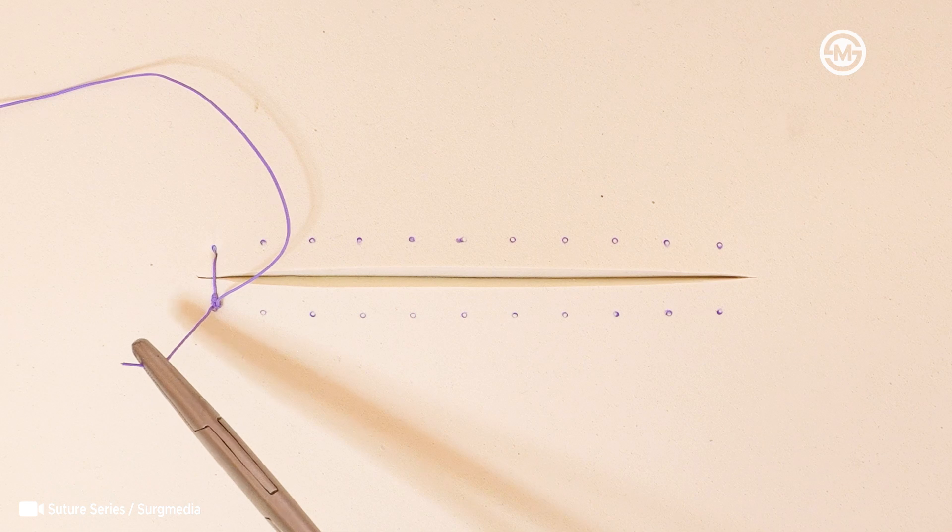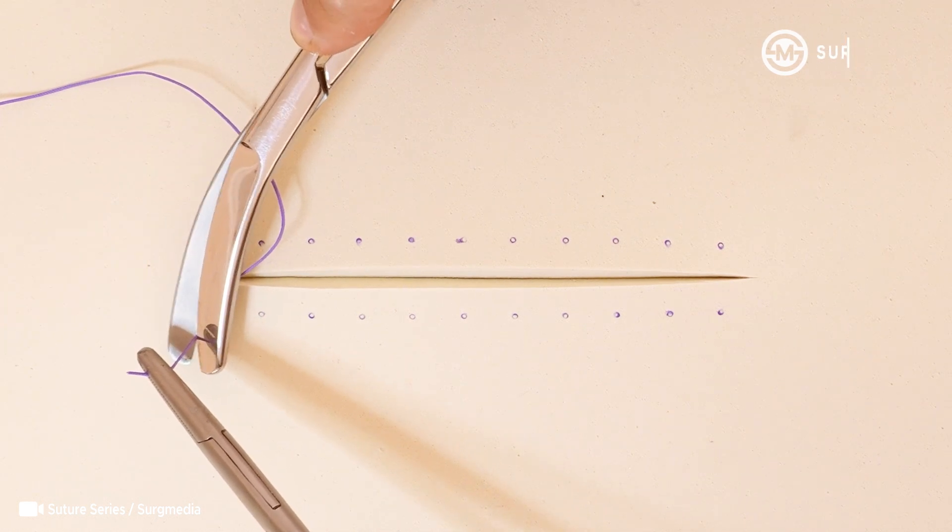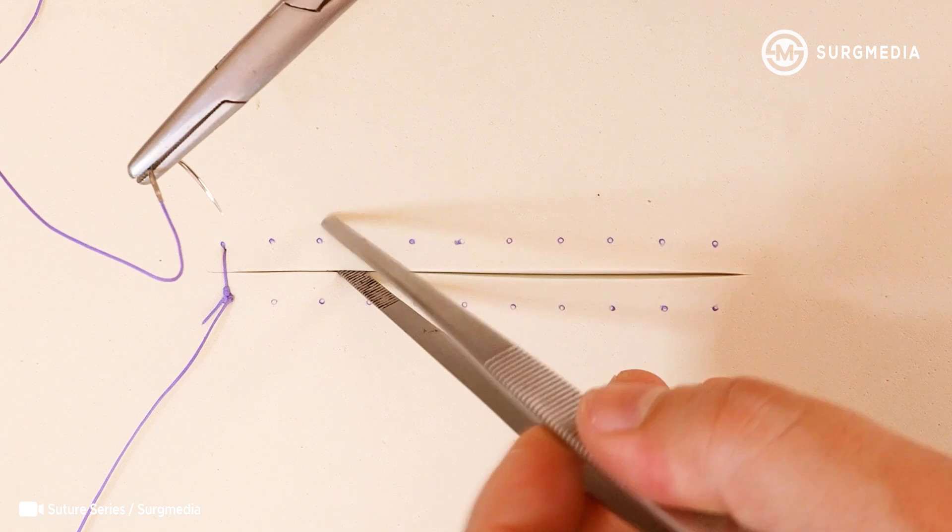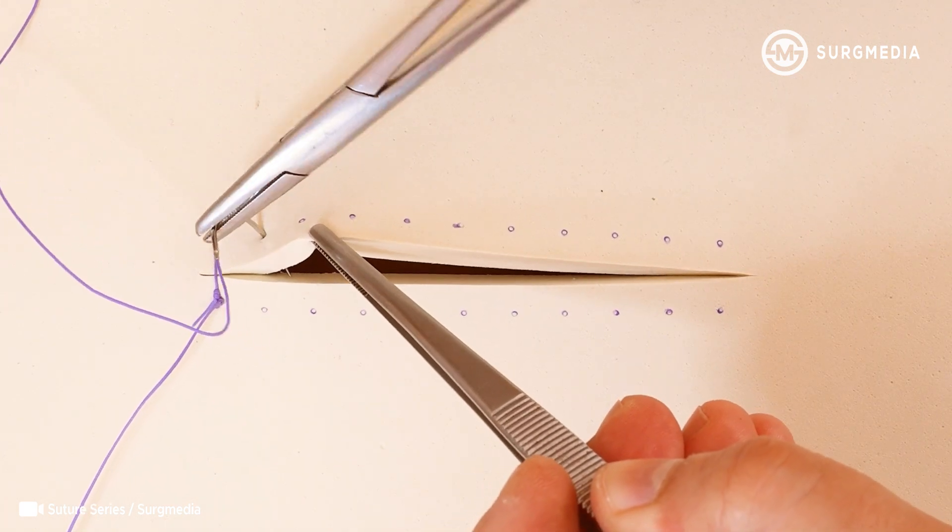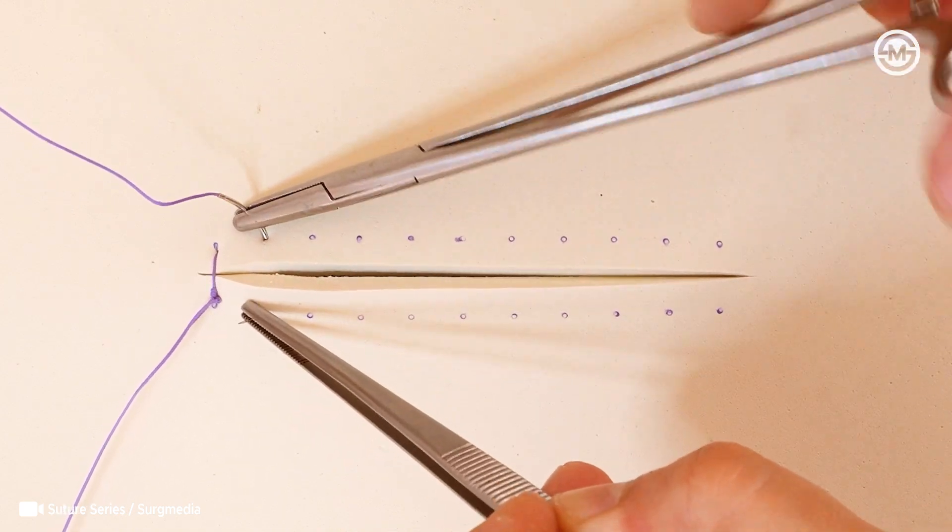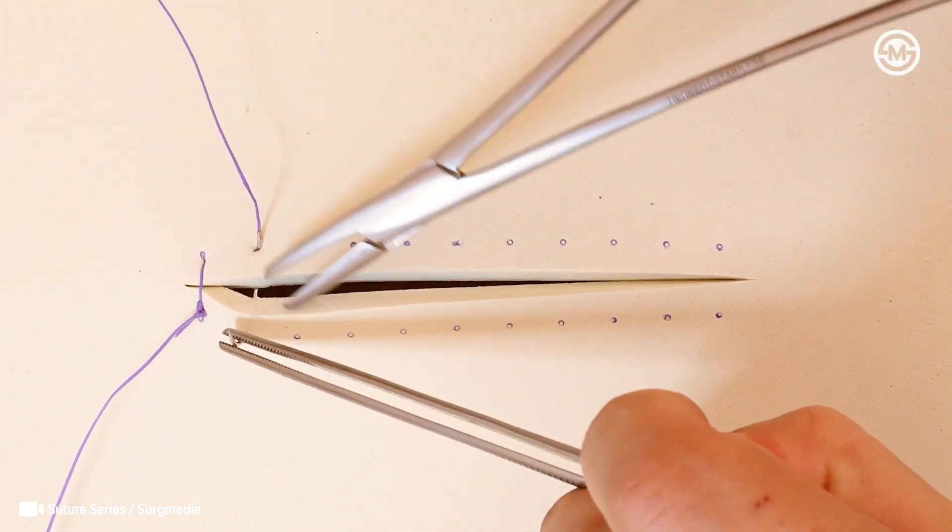So, how does it work? It's actually very similar to the simple interrupted suture, except here we're not stopping to tie a knot after every stitch. Instead, once the first stitch is placed, the suture continues in one smooth running line all the way to the end.